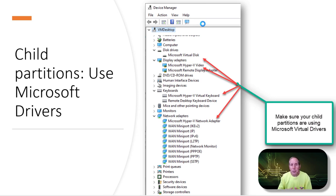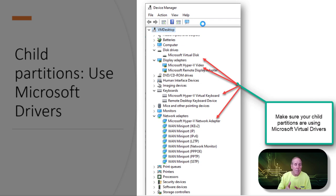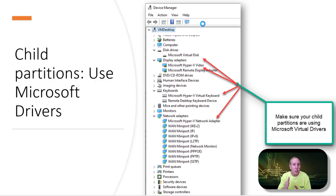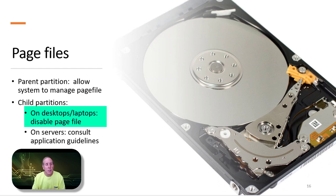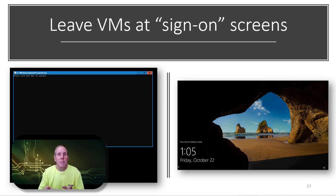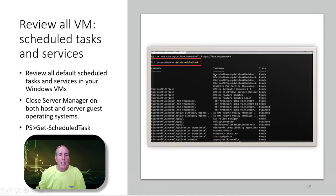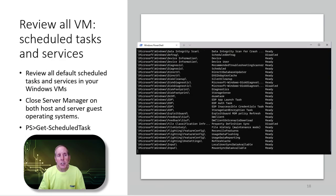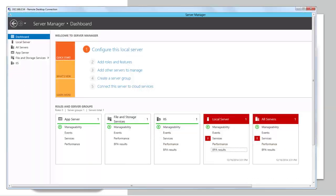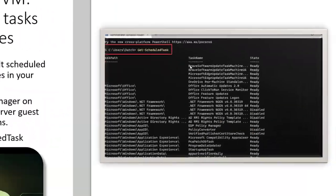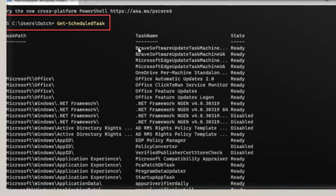In your child partitions, make sure you're using Microsoft drivers. Go into Device Manager and check all your major subsystems to confirm you're using the Microsoft virtual driver. When it comes to page files, the parent partition is recommended to let the system manage the page file. In child partitions running Windows 10 or 11, you can pretty much disable your page file. On servers, consult the application guidelines. If you're setting up virtual machines, leave your VMs on the sign-on screen, do not use screensavers, and review scheduled tasks and services — many can be disabled. If you have a server OS in a VM, make sure you close Server Manager.